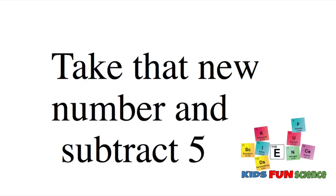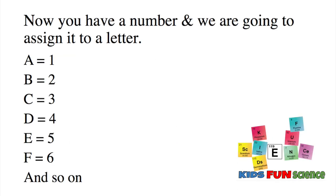Now take that number and subtract it by 5. So now you have a number. We're going to assign it to a letter. If you have 1, it equals A, 2 equals B, 3 equals C, and so on, and find out what letter is yours.